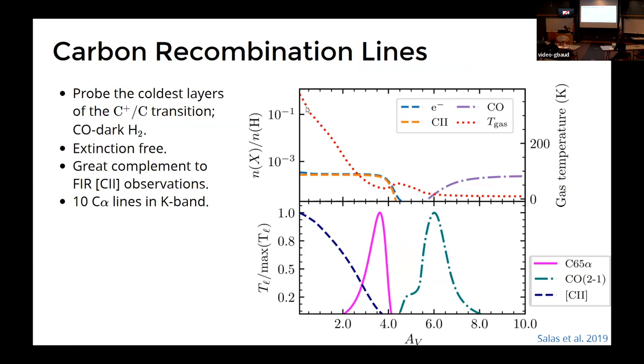You have the PDR structure. We have temperature shown by this dotted line, the abundance of the ionized carbon and the electrons. So, you see that most of your electrons come from the ionization of carbon and you see C+ is really coming from the outer layers.